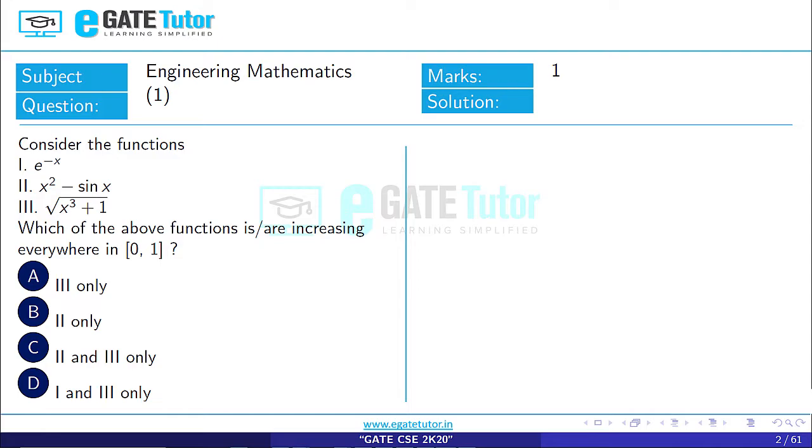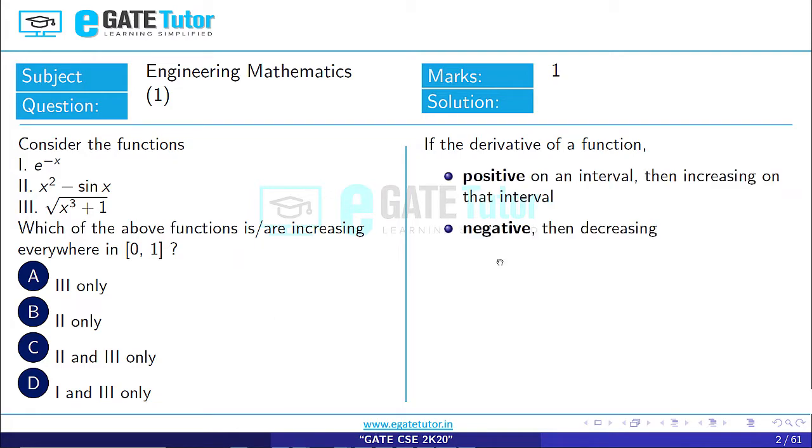For any function, if the function is increasing, then the derivative is positive. If the function is decreasing, then the derivative is negative. If the function is constant, then the derivative is 0.